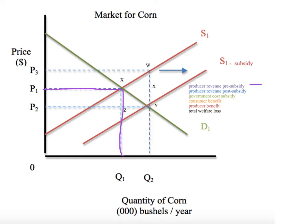Producer revenue post-subsidy: they get P2 in the marketplace, but then they get an extra dollar from the government. So the price they actually receive is P2 for selling Q2, plus the government gives them an extra buck. The total producer revenue post-subsidy is P3, Q2.